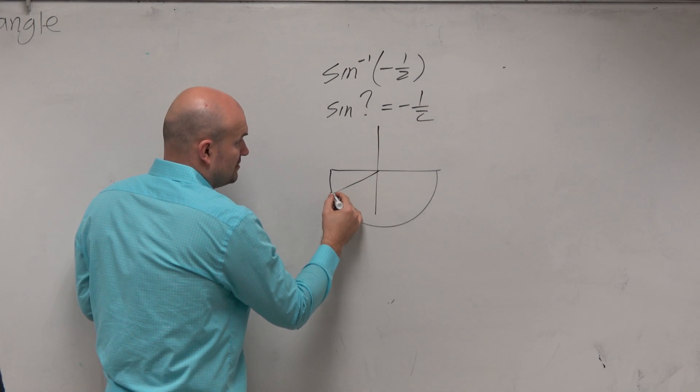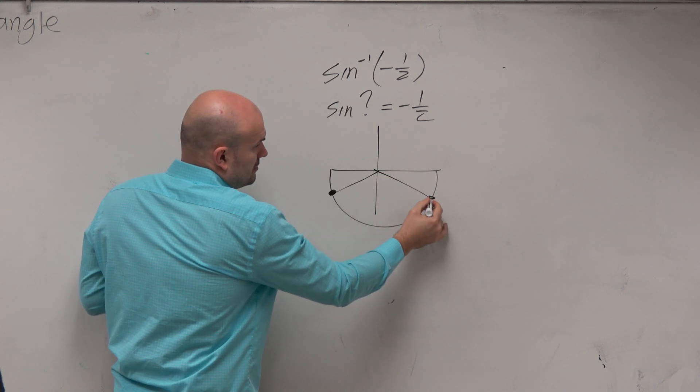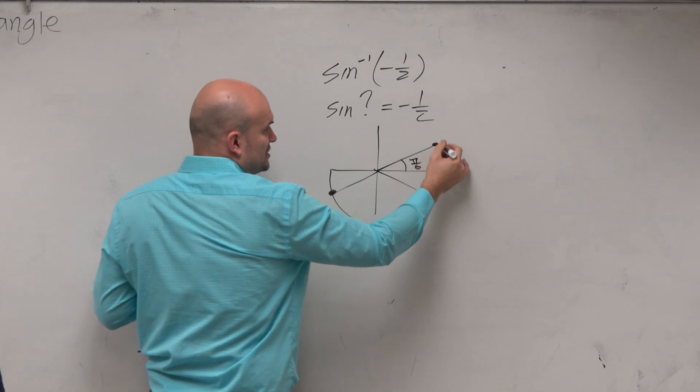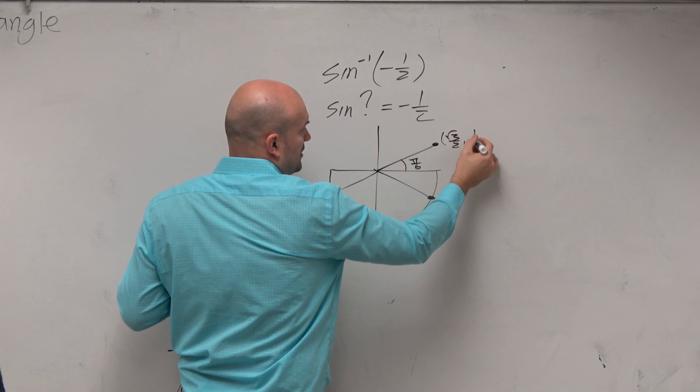And there's only two points if they have the same reference angle as this one, which is that π/6, which is this one: square root of 3 over 2, comma, 1/2.